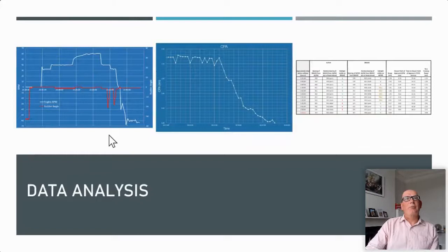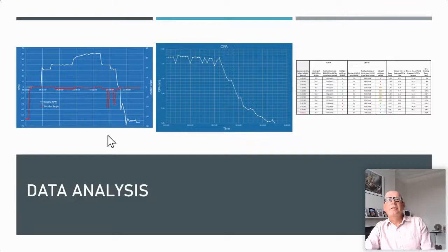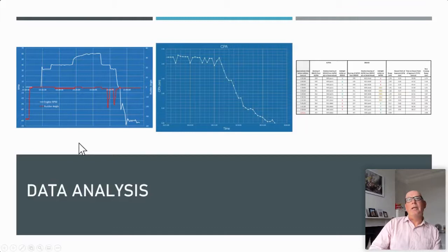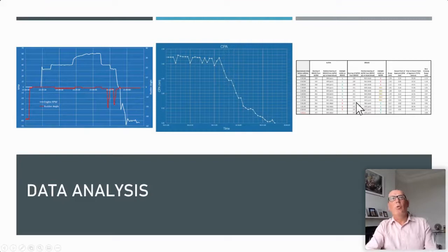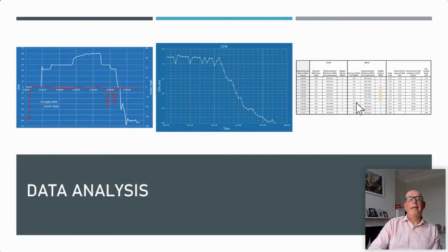From the Rapid Replay data, we can also dig in further and analyse it in whatever way most benefits the analysis of that incident — for example, trying to show what lights would be showing, whether we're looking at the red and green sidelights of the vessel and at what times those lights would have become apparent. Going back to the basics of seamanship and showing the seamanship aspects, but using data to make the point.